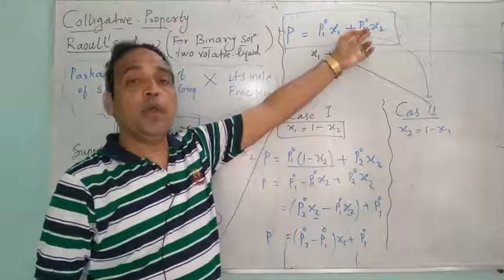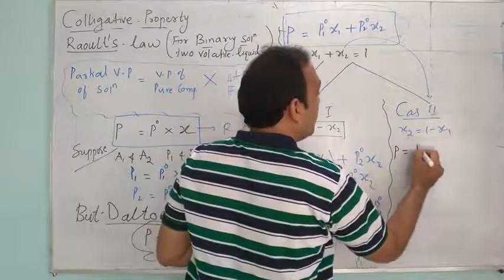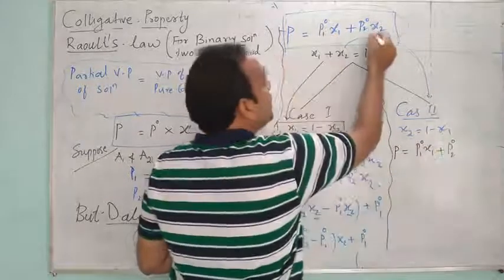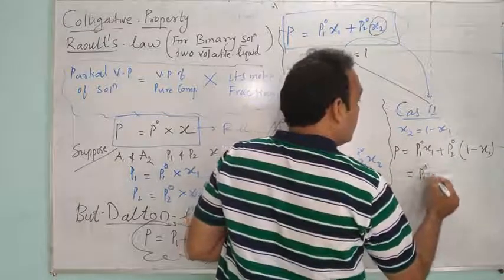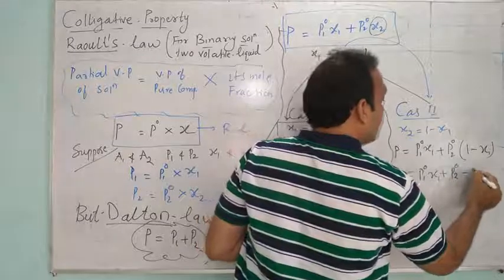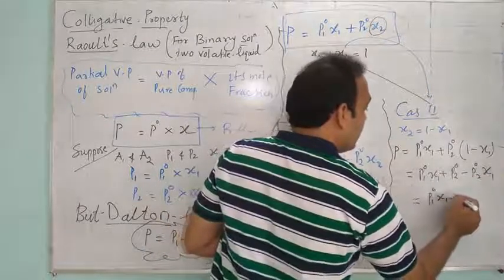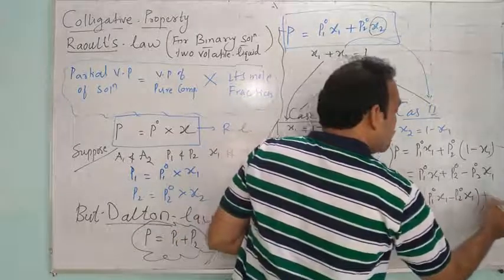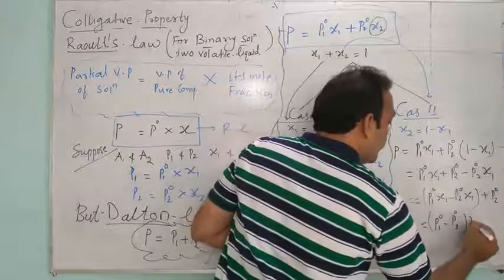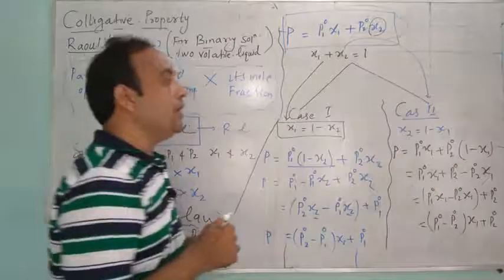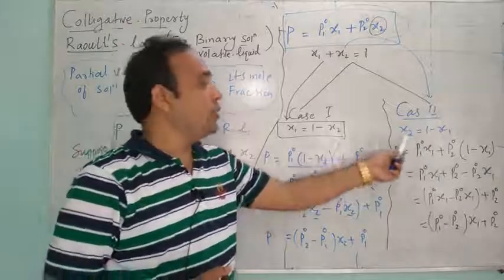For Case 2, substituting X2 = 1 − X1: P = P01·X1 + P02(1 − X1), which simplifies to P = P01·X1 + P02 − P02·X1. Rearranging: P = (P01 − P02)·X1 + P02. This is the Raoult's law derivation for both cases when X1 = 1 − X2 and X2 = 1 − X1.